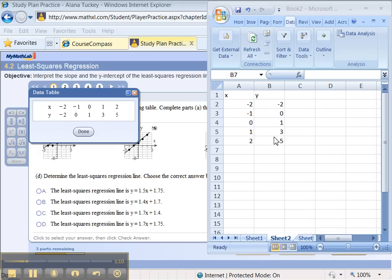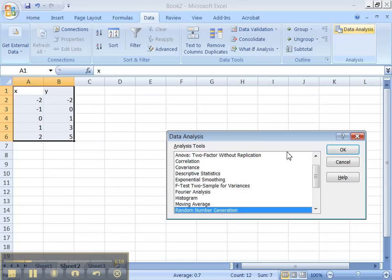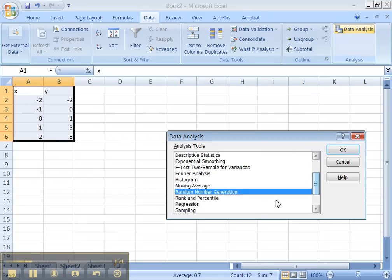Alright, I've got my data in. Let's see, what do we do? We highlight the data. Actually, I don't think we need to highlight. That's okay, it's not going to hurt us. Data analysis. Let's go to regression. Say okay.